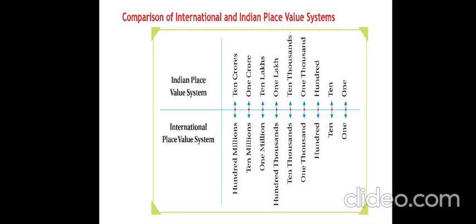Now we are going to compare the two place value systems. In the Indian place value system, there are: one, ten, hundred, one thousand, ten thousand, one lakh, ten lakh, one crore, and ten crore — moving from hundreds to lakhs and crores. In the international place value system: one, ten, hundred, one thousand, ten thousand, one hundred thousand, one million, ten million, and hundred million — moving from hundreds to thousands and then millions.